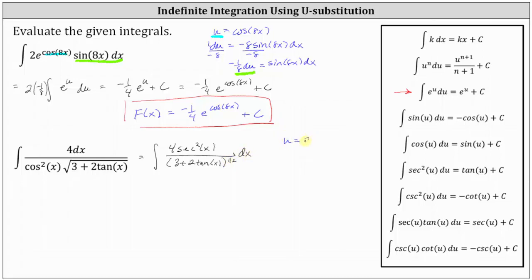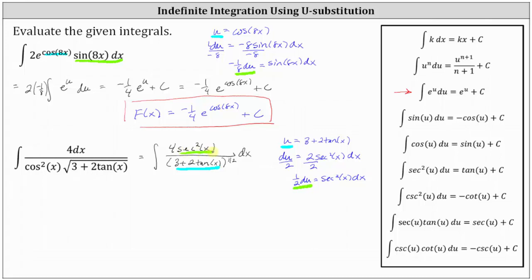So we'll let u equal three plus two tangent x, and therefore differential u is equal to the derivative of three plus two tangent x times dx, which gives us two secant squared x dx. Now let's compare u and du to the given integral. If u is equal to three plus two tangent x, the denominator is now u to the power of one-half, and we're left with four secant squared dx. We can multiply both sides by two so the right side is exactly four secant squared x dx, or we can solve for secant squared x dx. I'm going to solve for secant squared x dx, because it's not always easy to determine what to multiply or divide by to get an exact match. By dividing both sides by two, we know that one-half du is equal to secant squared x dx.